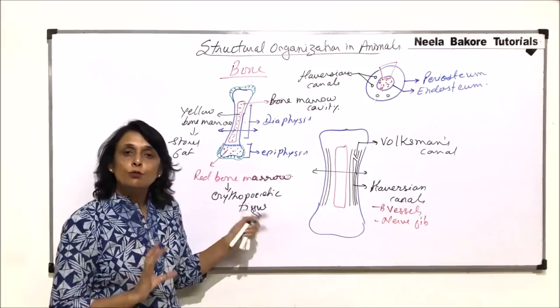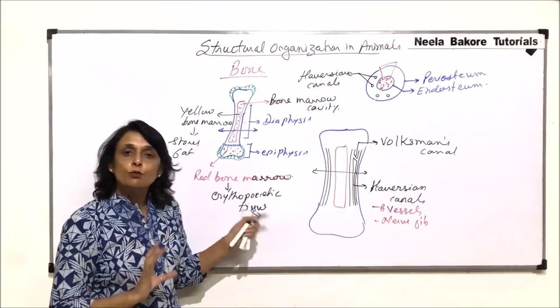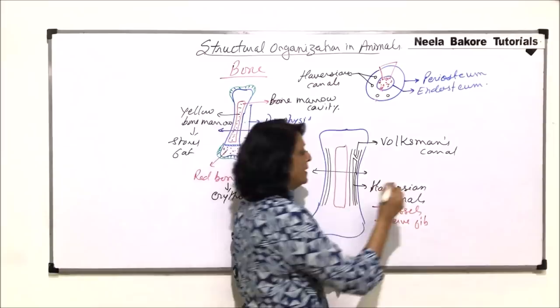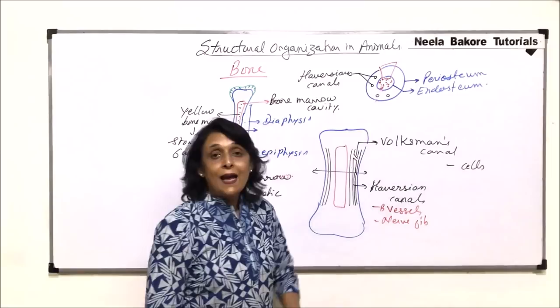The function of all these canals is so that the blood vessels and nerve fibers can run all through this compact tissue. What all structures are going to be seen inside? It is a connective tissue, so we would find cells.